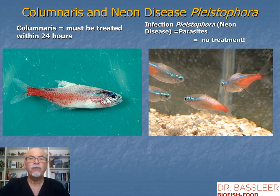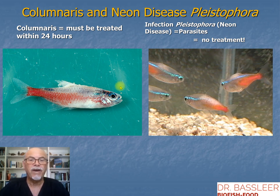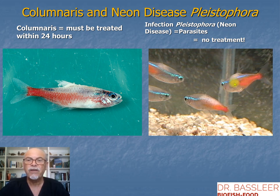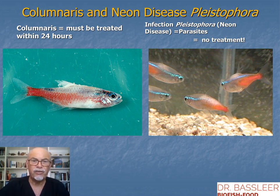Some info about columnaris and its resemblance to neon disease, Pleistophora. Columnaris here on the left — the cardinal tetra — you see the white saddle, necrotic tissue, and also fin rot on the dorsal fin. You can treat this within 24 hours and you might have success. On the right we have neon disease, the real neon disease caused by the parasite Pleistophora, which is inside the muscular tissue. You cannot treat it, and the fish can live many months or years with this bad-looking tissue — but it doesn't die as quickly as with columnaris. With bacterial infections, the fish die very fast.